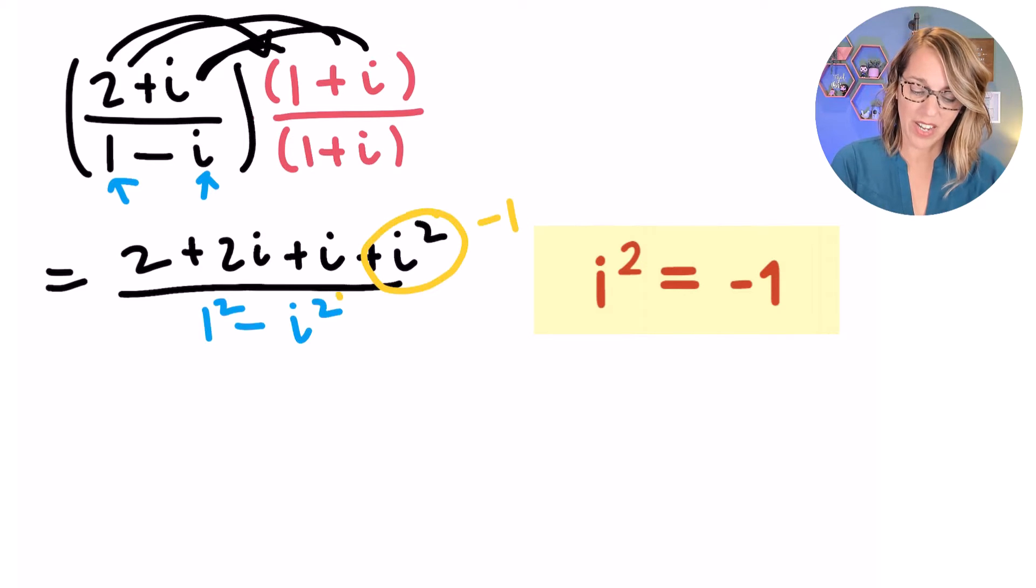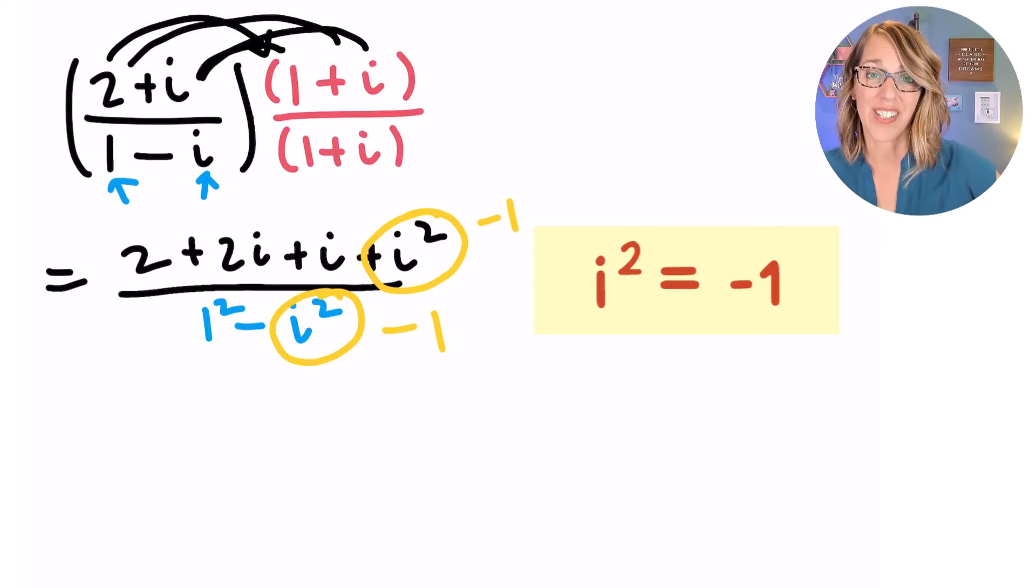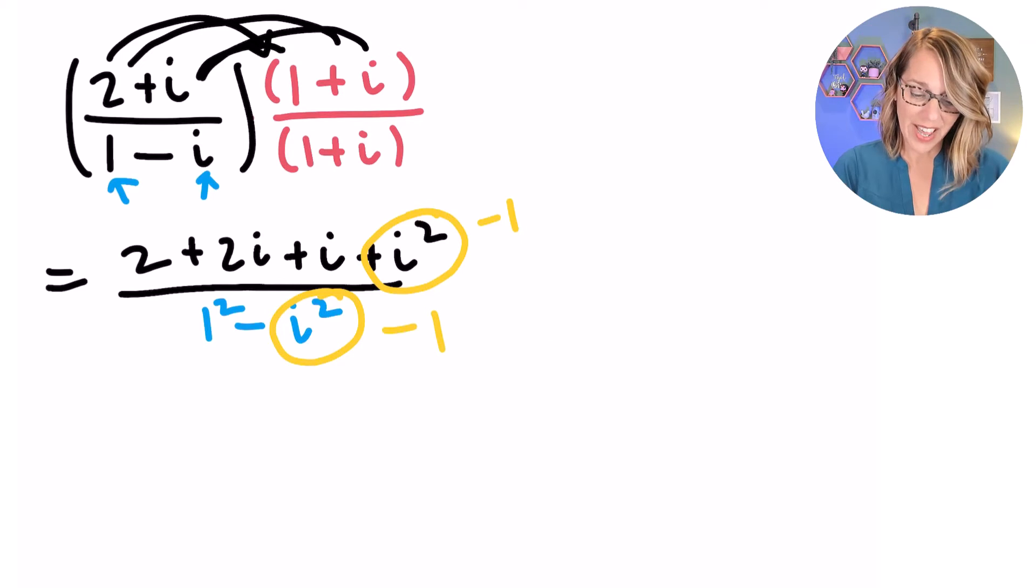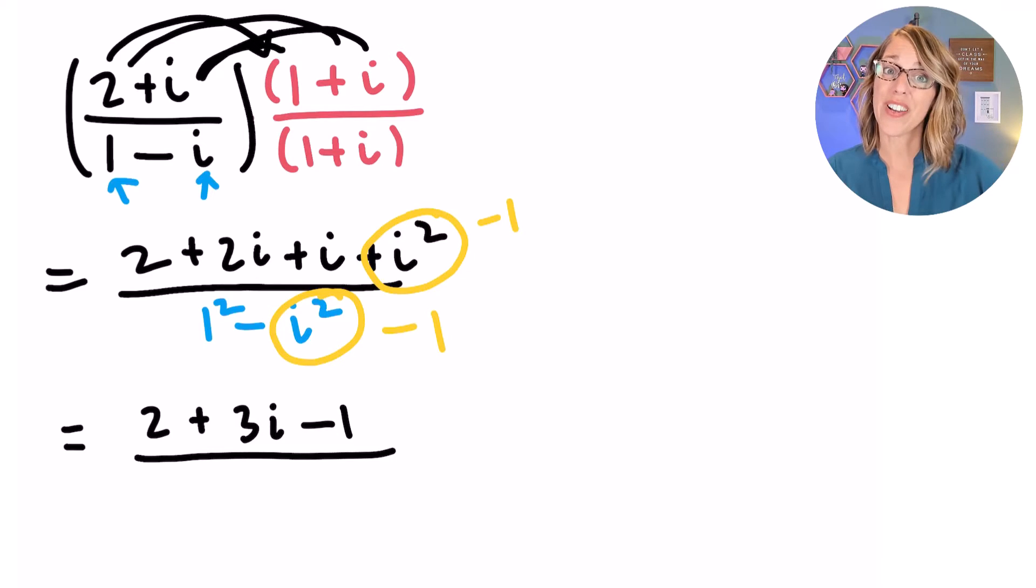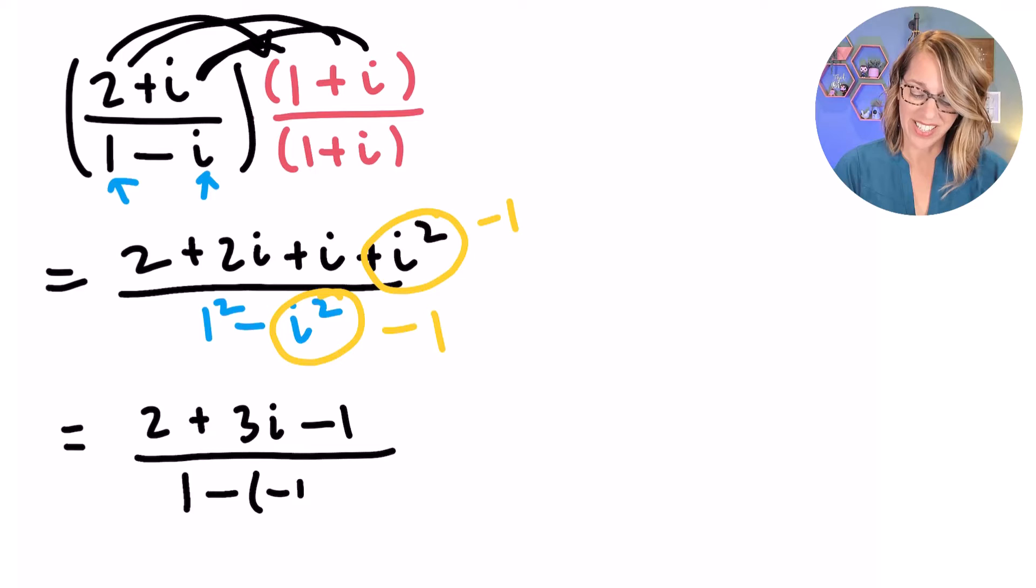Now I know by the definition that I squared is negative 1, so I can replace this I squared with negative 1 and this I squared with negative 1 as well. Starting to clean up my numerator, I've got that 2 and then those I terms. 2I plus I is 3I, and we're going to replace that I squared with negative 1 on the end. In my denominator, I have 1 minus negative 1, which becomes plus.